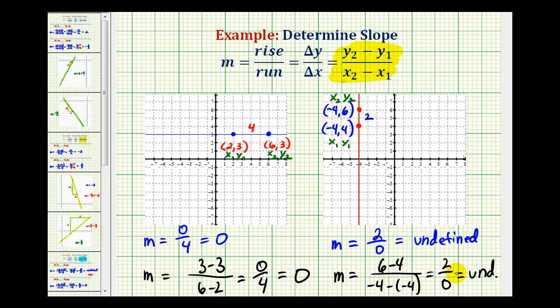So, whichever method we use, every vertical line is going to have an undefined slope, or sometimes you'll hear books say no slope, or sometimes even an infinite slope. I hope this was helpful.